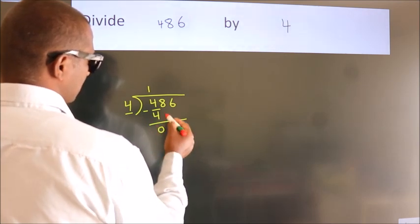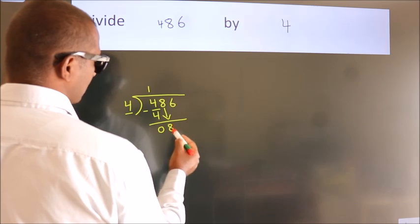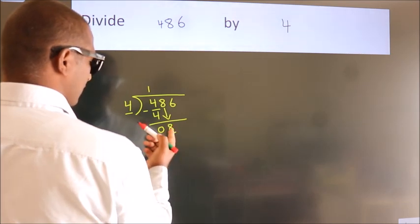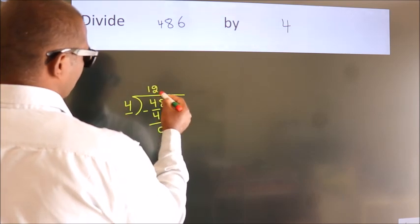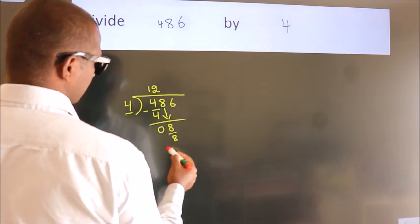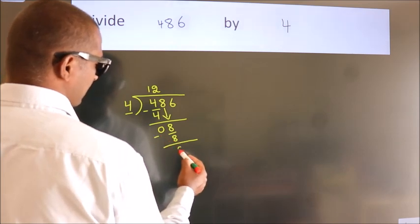After this, bring down the beside number. So 8 down, so 8. When do we get 8? In the 4 table: 4 twos is 8. Now we subtract. We get 0.